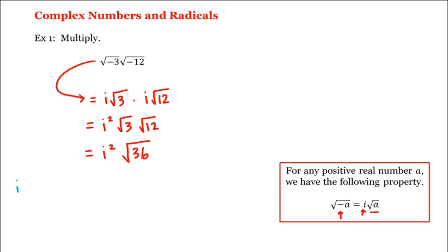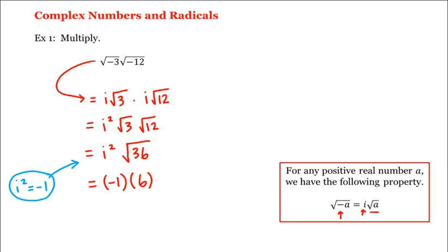Remember that i squared is equal to negative 1, which we can use here. Therefore this is equal to negative 1 times the square root of 36, which is 6, giving us negative 6, which would be our answer.